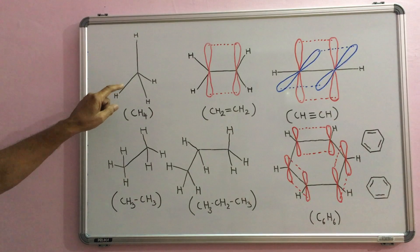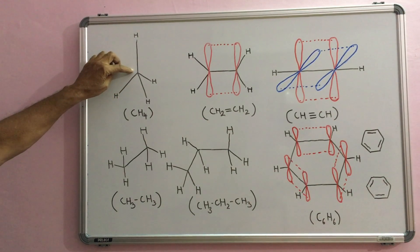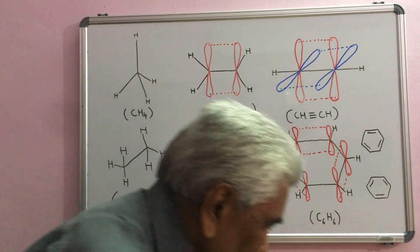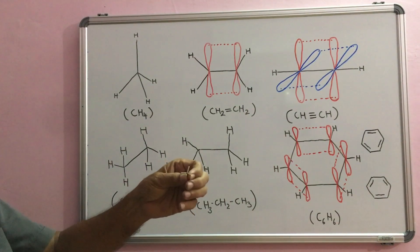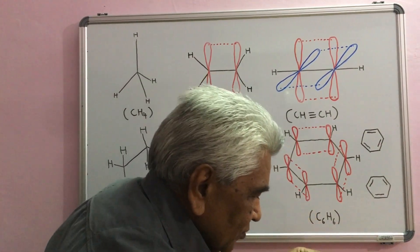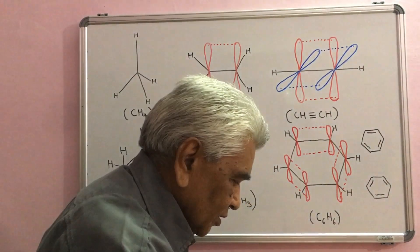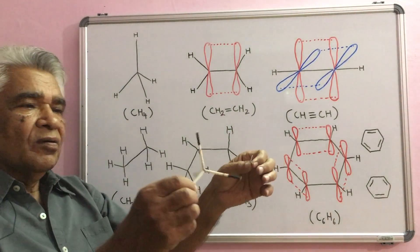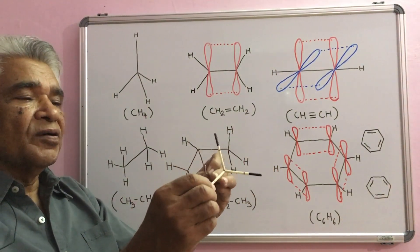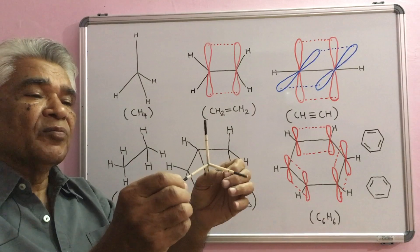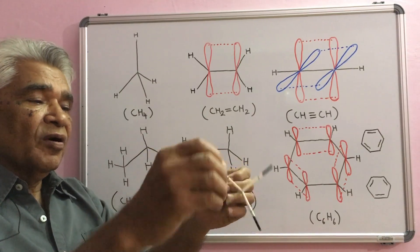First one is sp3 hybridized carbon, which looks like this, or you can say like this. All these angles are 109 degrees and 28 minutes from all sides.